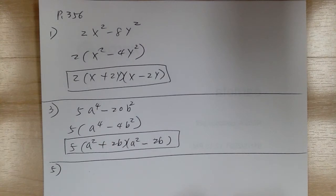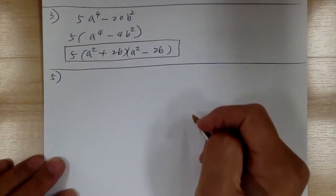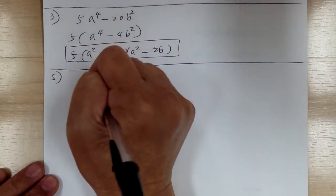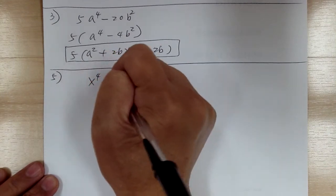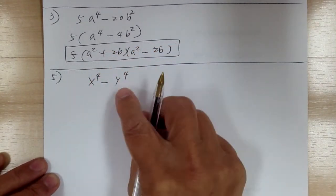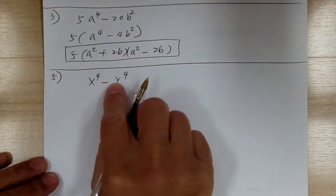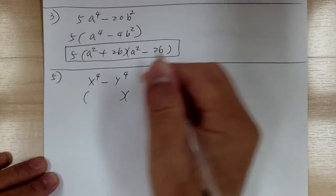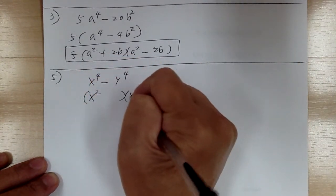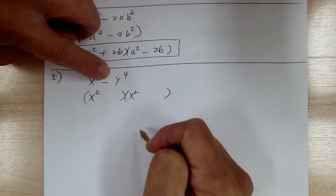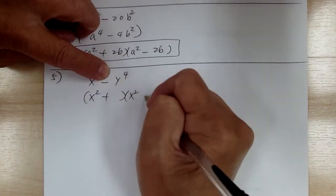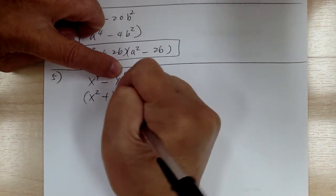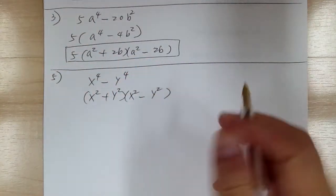Number 5. You have x to the 4 minus y to the 4. Step 1, cannot. So step 2, step 2b. This is the difference of squares. You're going to get x squared, x squared, plus and minus. Plus times minus gives you minus. This one you need y squared, y squared.